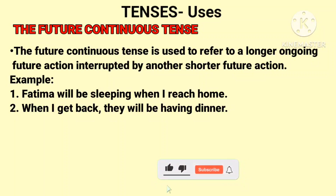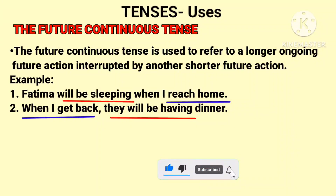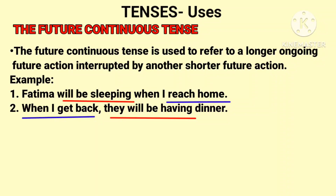The future continuous tense is used to refer to a longer ongoing future action interrupted by another shorter future action. For example: Fatima will be sleeping when I reach home — 'will be sleeping' is future continuous tense, and 'when I reach home' is the shorter future action. When I get back, they will be having dinner.